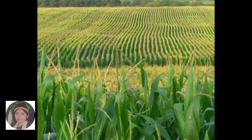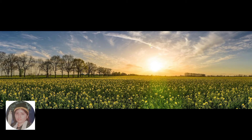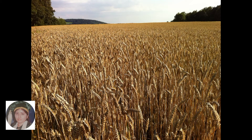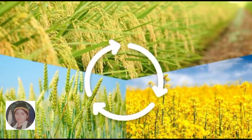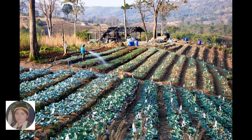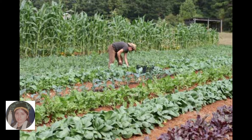Monoculture is widely used both in intensive farming and in organic farming. A thousand-hectare cornfield and a one-hectare field of organic crops are both monocultures. It has allowed farmers to increase efficiency in planting, managing and harvesting, but it can also increase the risk of diseases or pest outbreaks.